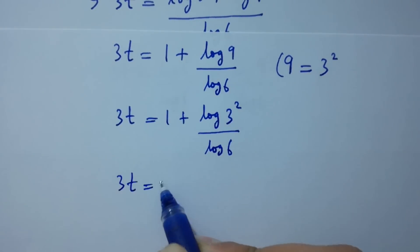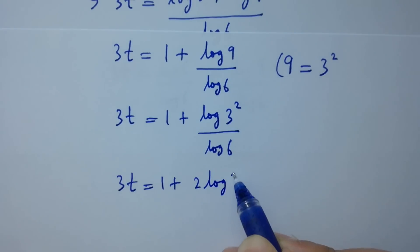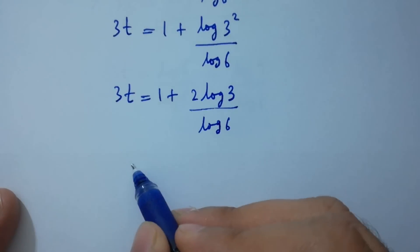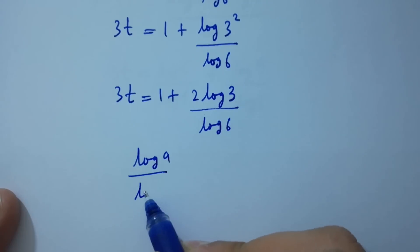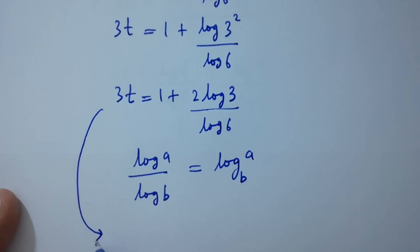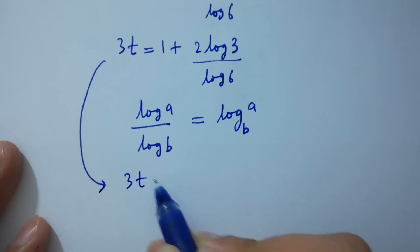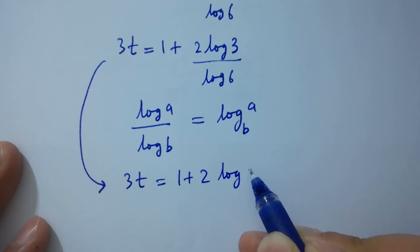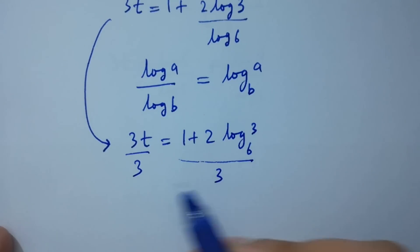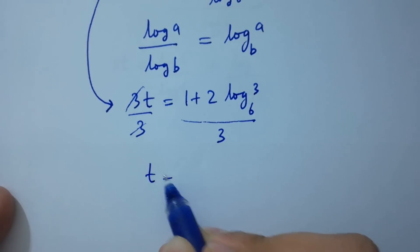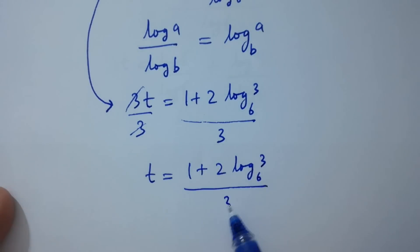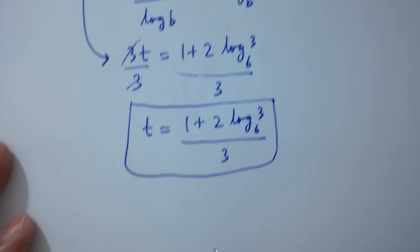Since log 9 equals 2 log 3, we have 3t equal to 1 plus 2 log 3 over log 6. Using the change of base formula, log a over log b equals log a to the base b, so 3t equals 1 plus 2 log 3 to the base 6. Dividing both sides by 3, t equals (1 plus 2 log 3 to the base 6) over 3.